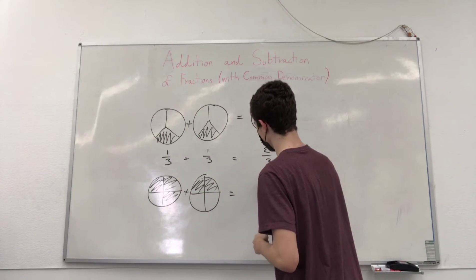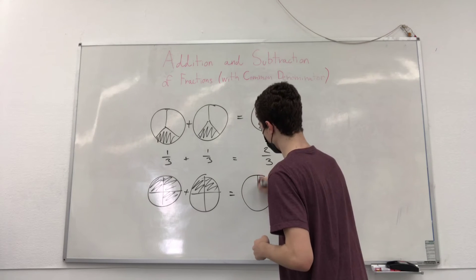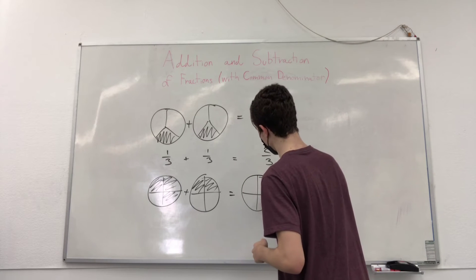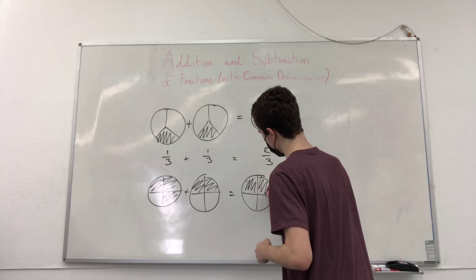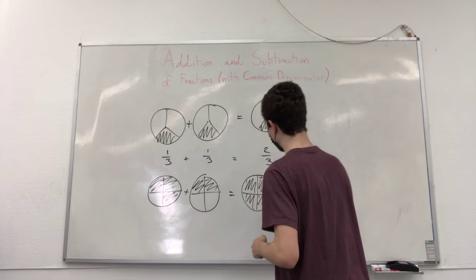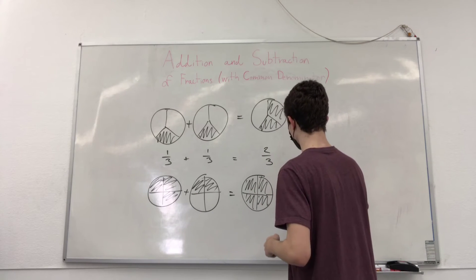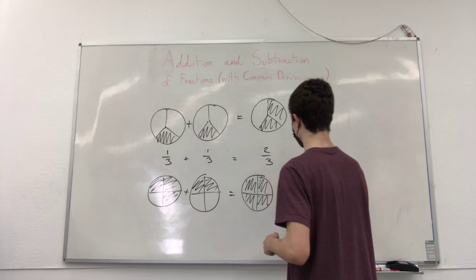Then if we draw that, we would have four parts, correct? Or four fourths. And one more fourth. So we would have five fourths in total, right?